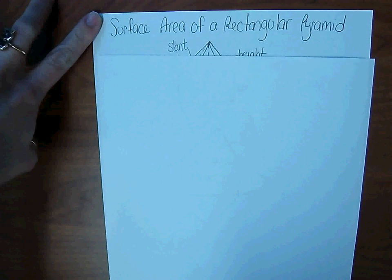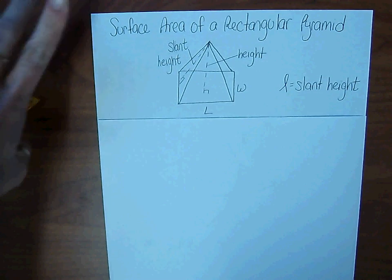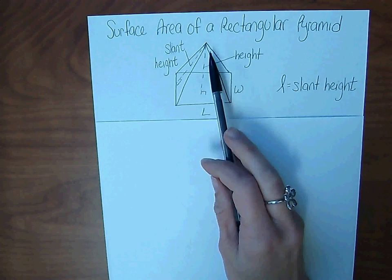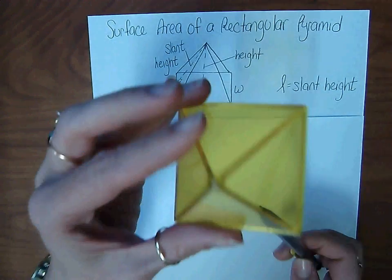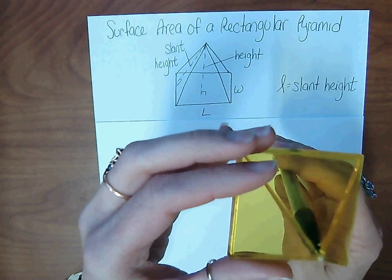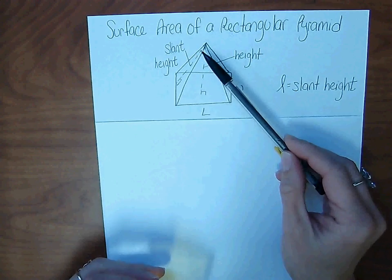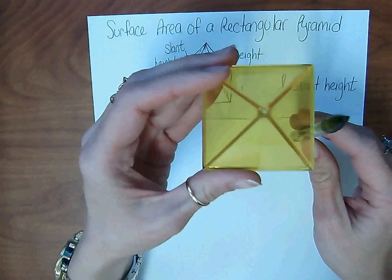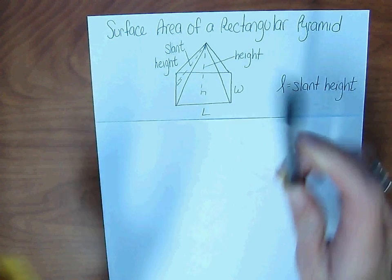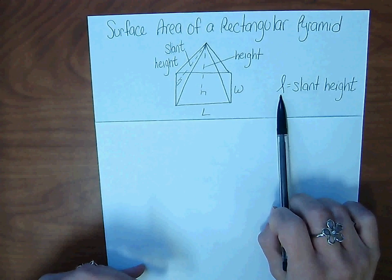In a rectangular pyramid, we have the length and the width of the base, and then the height, the straight up and down height inside of the pyramid. We also now talk about the slant height. That would be leaning over. This is slant height. And slant height, we use the cursive letter L.